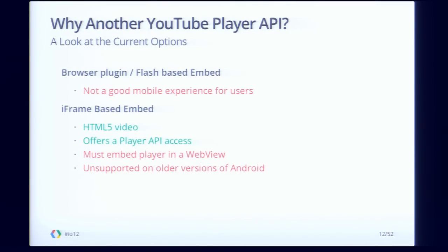The second option is an iFrame-based embed — a newer option which offers HTML5 video so it can be played on devices without Flash, and you can have full access to the player through an API. However, this is embedded in a web view, so the API is JavaScript, and there's an impedance mismatch between the Java you're writing and the JavaScript in the API. It's also unsupported on some versions of Android. The final option is what most of you end up doing: throwing off an intent to launch the YouTube video in the native Android YouTube player. This is really easy to do and gives a native experience to users. However, you can't embed it within your own UI, you have no player API access, and the user ends up leaving your app — this has been described as a kind of out-of-body experience by some of our partners.